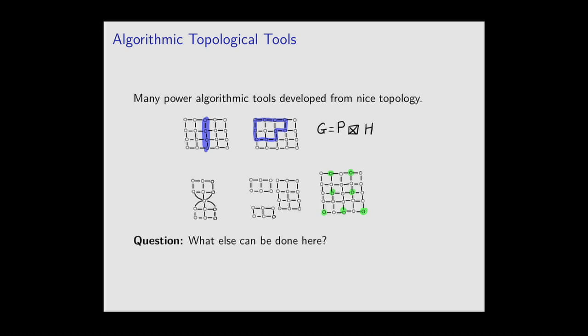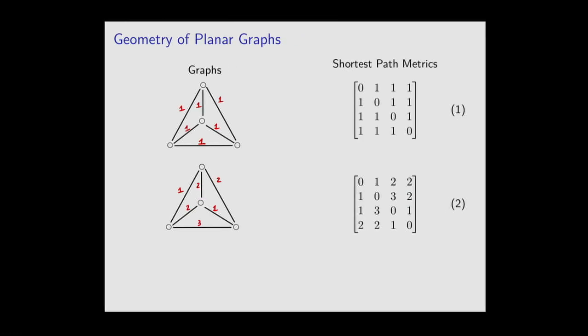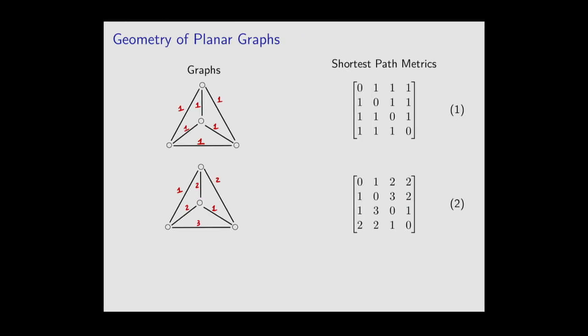This is a question I asked myself a couple of years ago: what else can be done? People did a lot; we came up with an amazing set of algorithmic tools. So what else can we do? In analysis, there's a lot we don't know about the geometry of planar graphs.